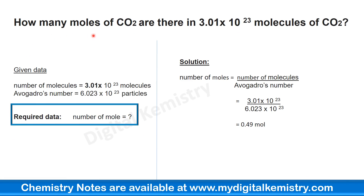The next question is: how many moles of carbon dioxide are there in 3.01 × 10²³ molecules of carbon dioxide? The number of molecules given is 3.01 × 10²³. We will use the formula: number of moles equals number of molecules divided by Avogadro's number, which is 6.023 × 10²³. So 3.01 × 10²³ divided by 6.023 × 10²³ equals 0.49 moles.